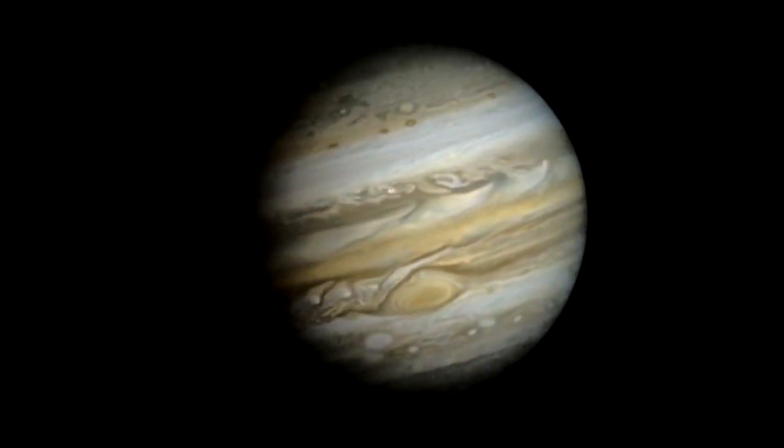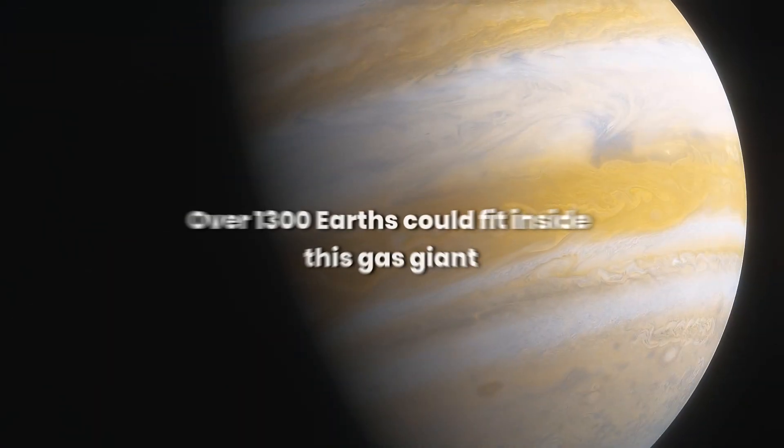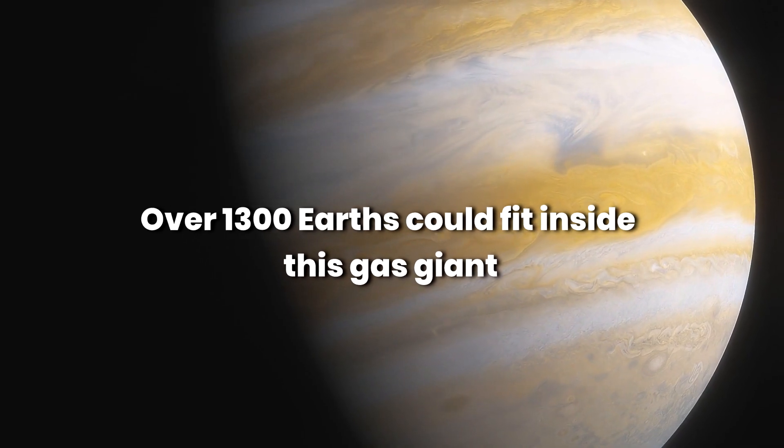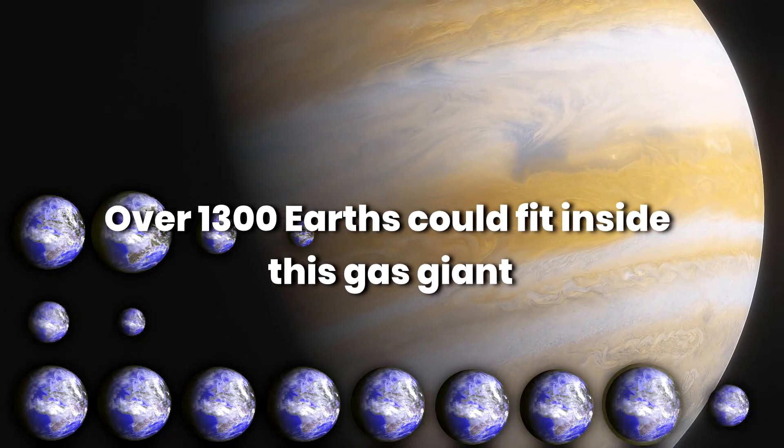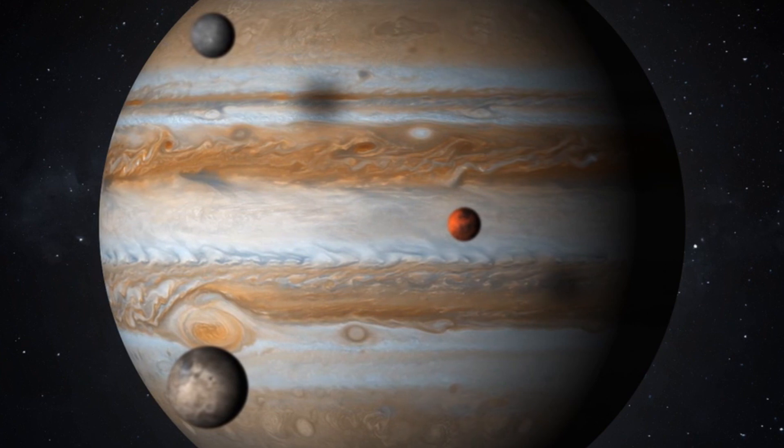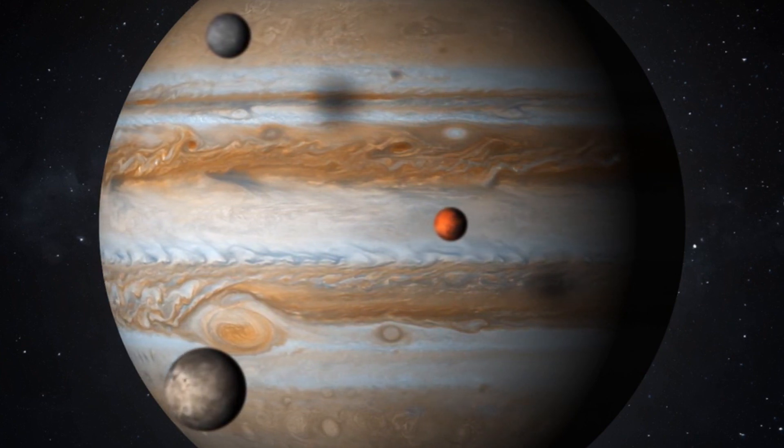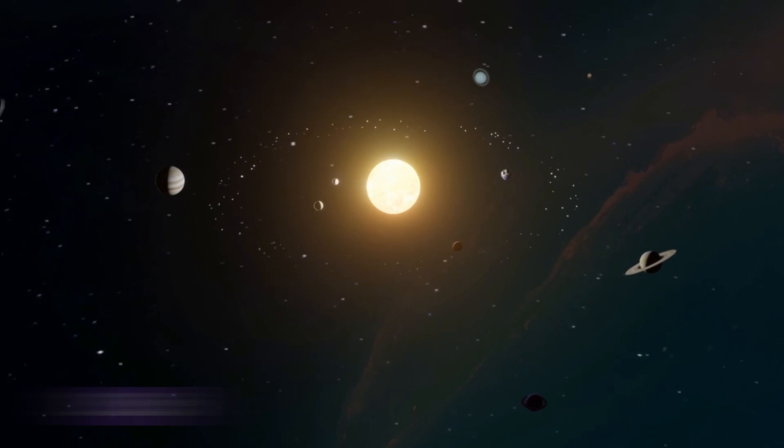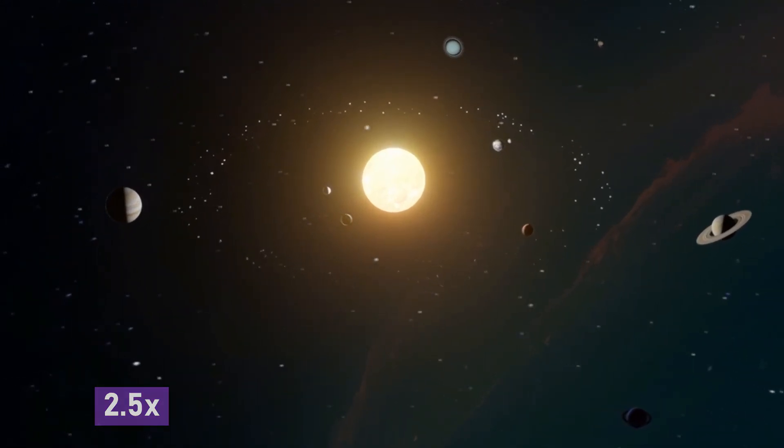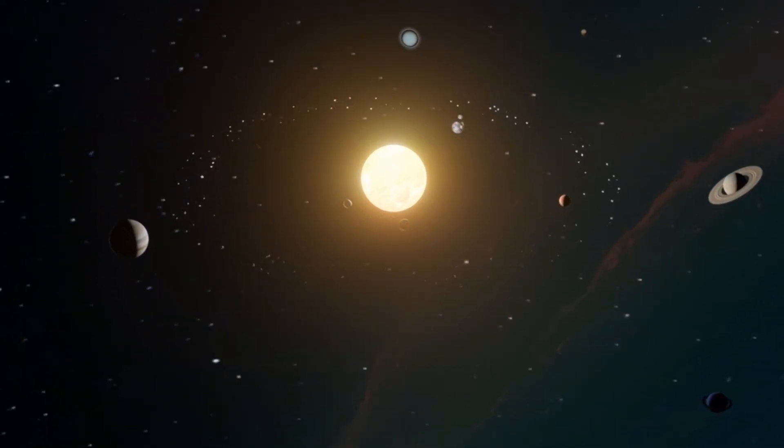Jupiter is the largest planet within the solar system, and over 1,300 Earths could fit inside this gas giant. Jupiter is also the biggest gas giant ever discovered and is two and a half times as massive as all the other planets in the solar system combined.